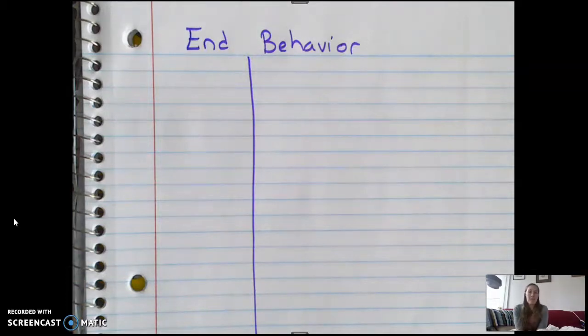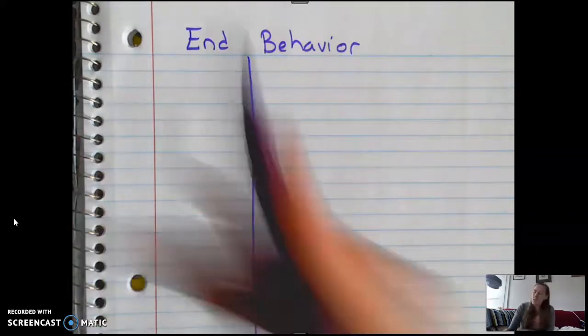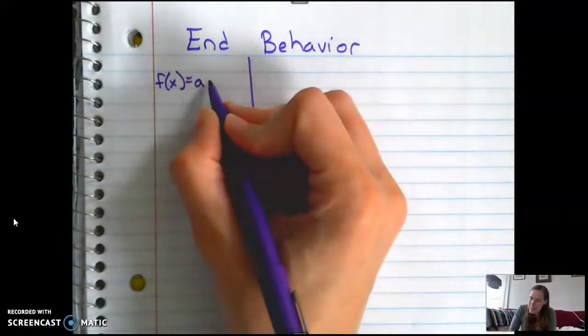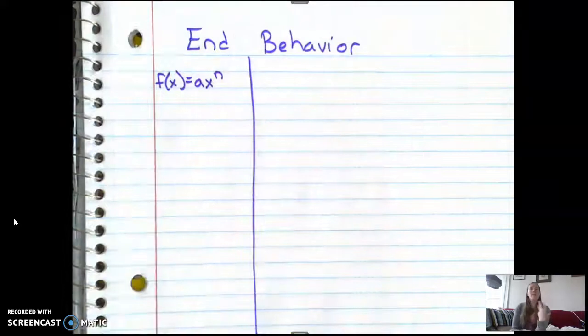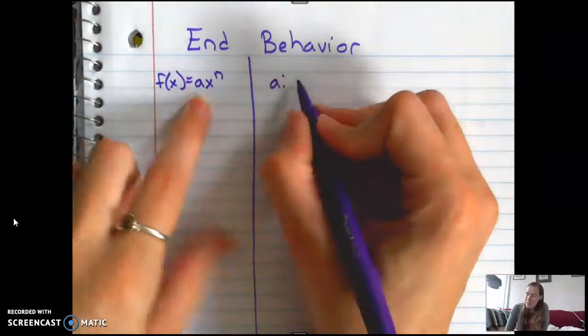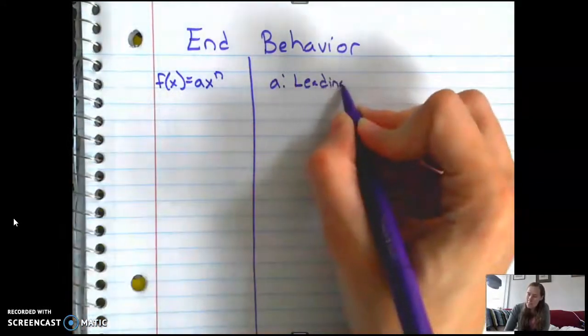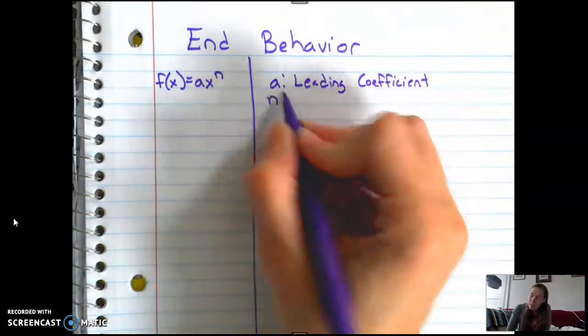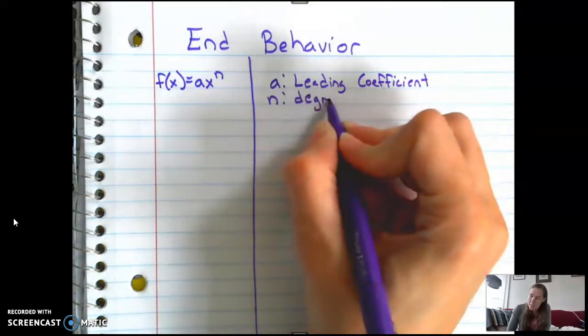So you don't have access to calculators right now, or you might. I know I don't know where mine is, but I know I have one, but I know you might not. So this is going to teach us how to figure out how this graph might look like without the ability to graph it. So say we had a polynomial, and say we had something like f of x equals ax to the n. So this is just the general form, where this a is going to be our leading coefficient, and our n is going to be our degree.